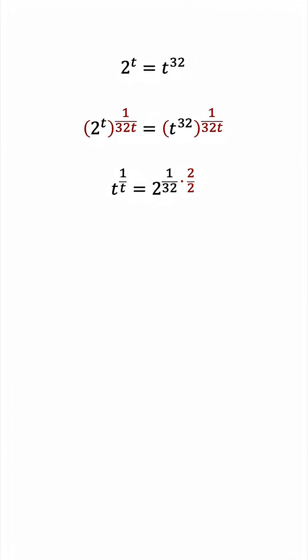then using laws of indices, we can rewrite this as 4 to the power of 1 over 64. We successfully increased 2, but 32 was also increased to 64. So are we failing?